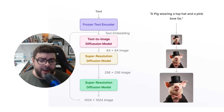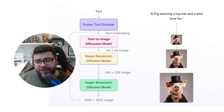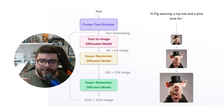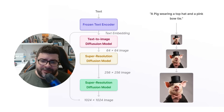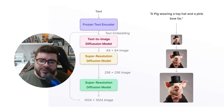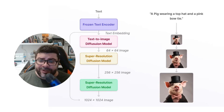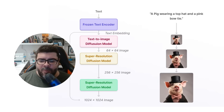This is the diffusion model architecture. The input text is transformed into a numbers vector that we call the text embedding, and this is produced by the frozen text encoder. After that, the text embedding is transformed into an image with the text-to-image diffusion model. In general, this image is a low-resolution image, and we need a super-resolution diffusion model to create a larger image.